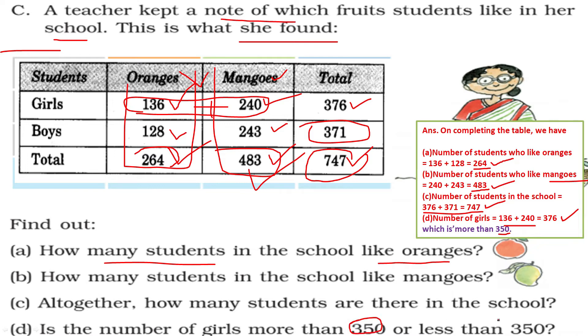Is the number of girls more than 350 or less than 350? Yes, it is more than 350. So for questions A, B, C, D — you can write the answers from the explanation.